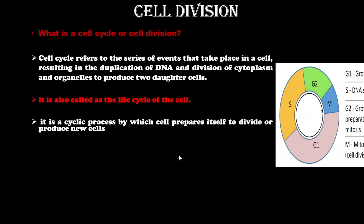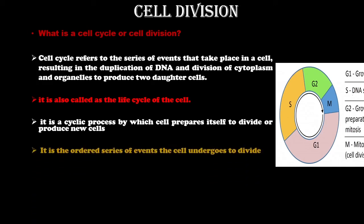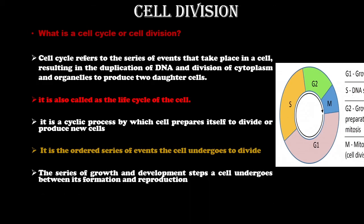The cell cycle is the ordered series of events the cell undergoes to divide. Another definition: it is the series of growth and development steps a cell undergoes between its formation and reproduction.